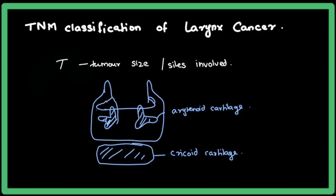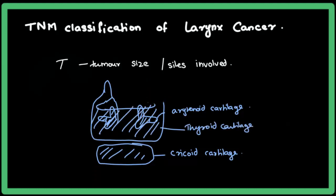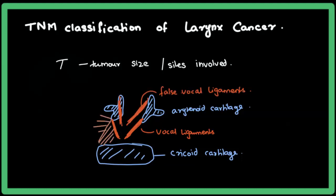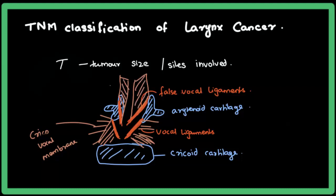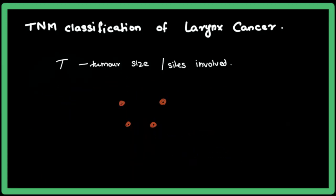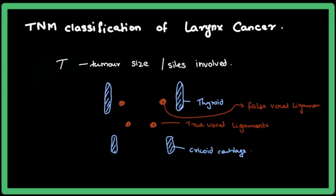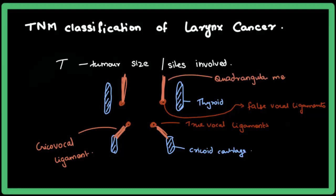The thyroid cartilage overlaps the arytenoid cartilage. In the front view, we can see the true vocal cords — the true vocal ligament — and the false vocal ligament, both attached to the thyroid cartilage. The cricovocal membrane connects to the false vocal cord region, which is the quadrangular membrane. In a 2D diagram, the thyroid and cricoid cartilage are visible along with the true and false vocal ligaments.